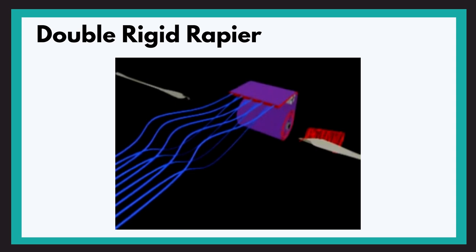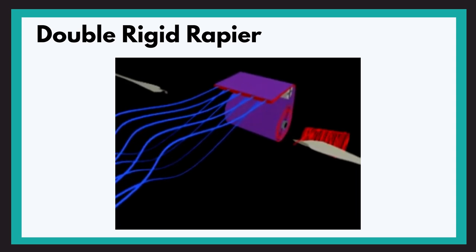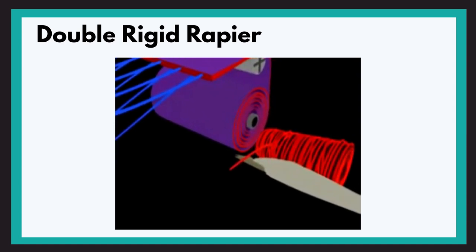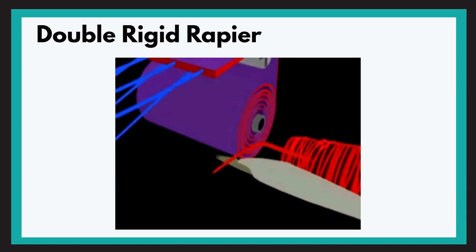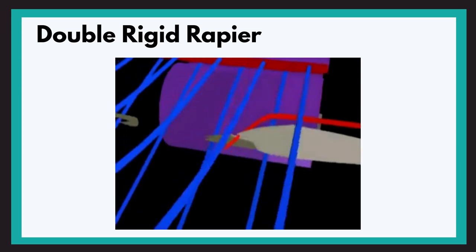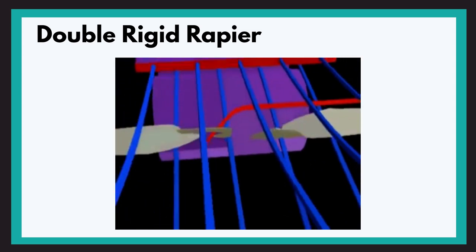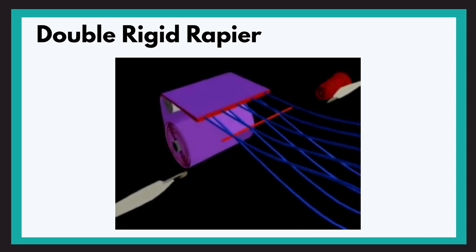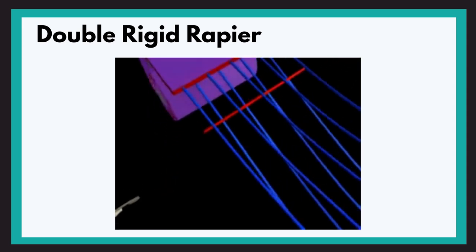Coming down to double rigid rapier. This has two rapiers in use, one is called the giver and the other is called the taker. Both of them travel only half the distance of the loom shed. Giver takes the filling yarn from the yarn accumulator, brings it to the center and then transfers it to the second rapier or the taker which takes it completely to the other side of the loom.